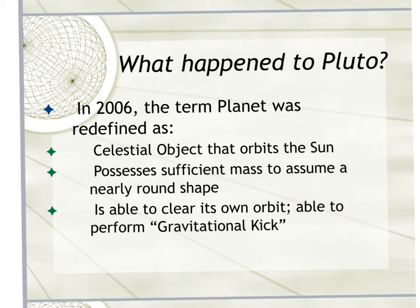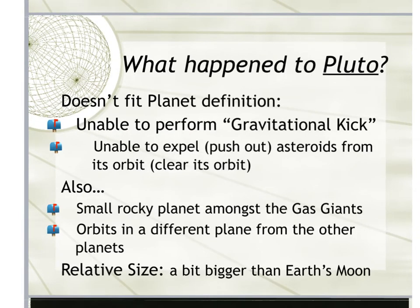Finally, it must be able to clear its own orbit, or what is called gravitational kick — meaning the planet, using its gravity, can push other objects out of its way. Pluto is too small to do this. It doesn't have the ability to perform gravitational kick. This is a problem because at some points in Pluto's orbit around the sun, it passes an asteroid belt, and if it can't push objects out of its orbit they can hypothetically run into each other. Because it doesn't fit that criteria, we now call Pluto a dwarf planet.